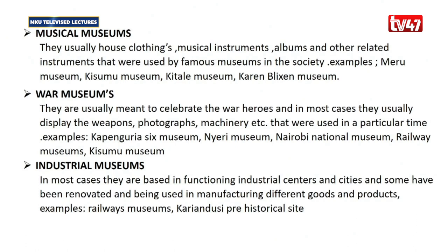Industrial museums are usually based in a functioning industrial centre or city, and some have been renovated and used in manufacturing different goods and products. Examples of industrial museums include the Railway Museums in Nairobi County and Kariandusi Prehistoric Sites in Nakuru County, known for the flow spa — lava — produced there.